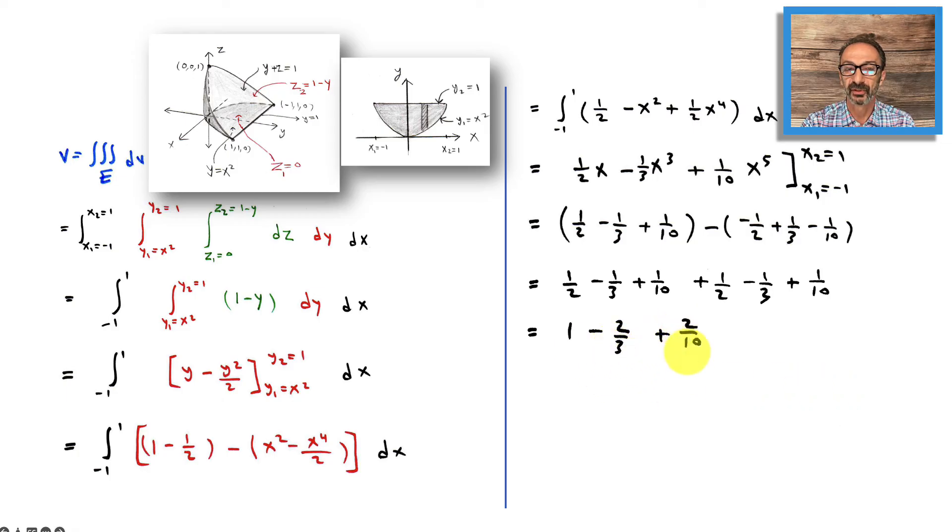We could add them with common denominator, which is 30. Multiply by 3, multiply by 10, 1 over 1 multiply by 30. I get the following: 30 minus 20 plus 6, which is 16 over 30. Simplify: divide by 2, divide by 2, 8 over 15, and that should do it.